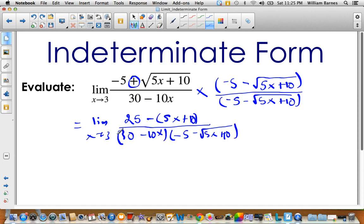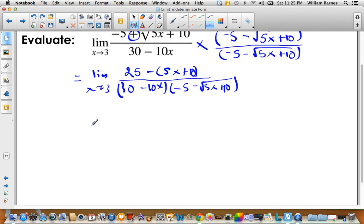And then the bottom. I end up with 30 - 10x. And then -5 - √(5x+10). Writing's getting a little messy here. Alright, so now what I can do is just simplify the numerator a little bit. So limit as x approaches 3. So I just got -5x. And then 25 subtract 10. So 15 plus 15. And then that's all over 30 - 10x, and then -5 - √(5x+10).